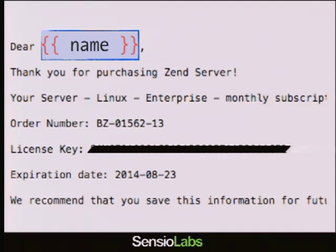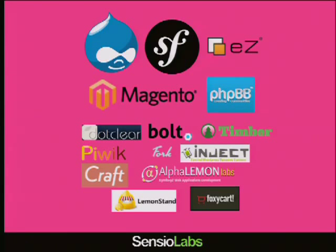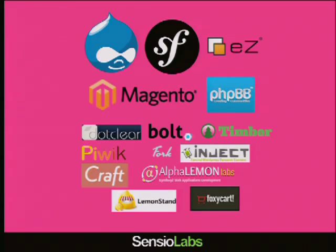The Twig syntax is actually used and shared with many other PHP projects — Drupal 8 being one of them — but there are many others using the exact same syntax. And even if you are not using PHP, if you're using Python, Ruby, or JavaScript, you can find similar templating systems with the exact same syntax. This means that if you learn Twig, you can reuse that knowledge in Python, Ruby, and JavaScript. JavaScript is interesting because you can share templates between your front-end and back-end.